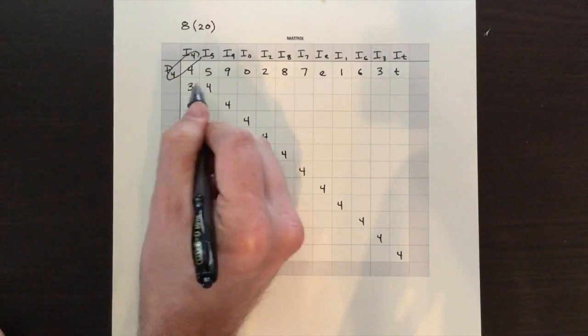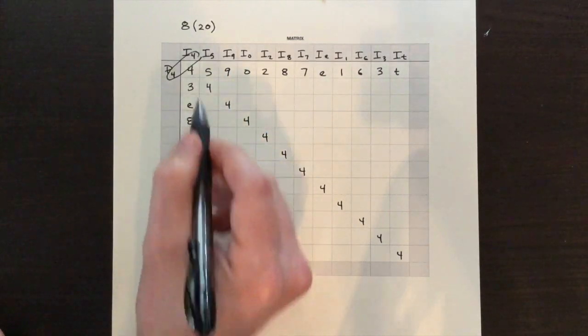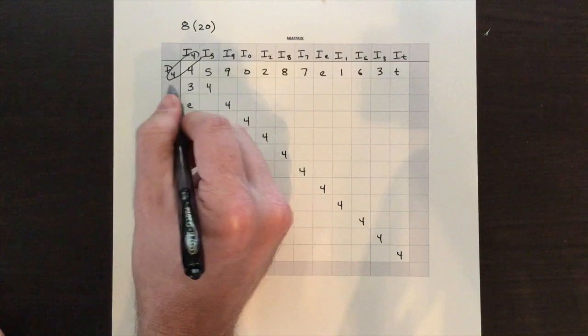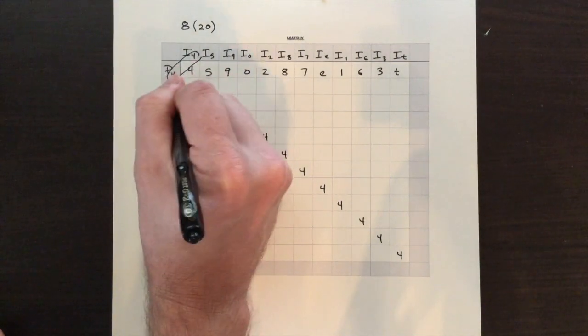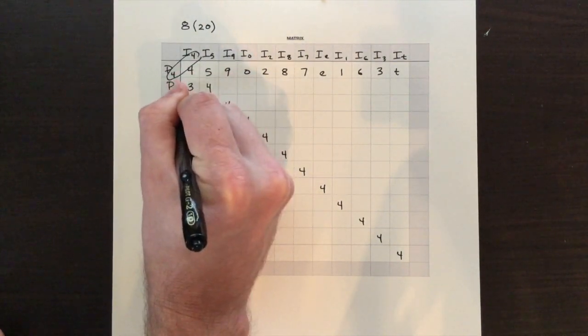And then we can label each of these P rows with the number that's in that column.